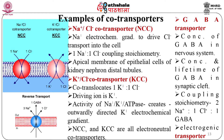NCC is found in the apical membrane of epithelial cells of kidney nephron distal tubules. The K+/Cl- co-transporter, KCC, co-translocates 1 K+ and 1 Cl- out of the cell per cycle; here the driving ion is K+. Activity of the Na+/K+-ATPase creates a large outwardly directed K+ electrochemical gradient. NCC and KCC are both electroneutral co-transporters.